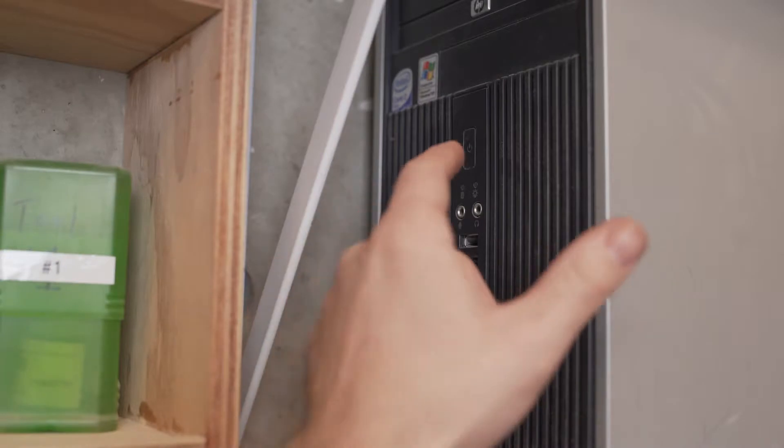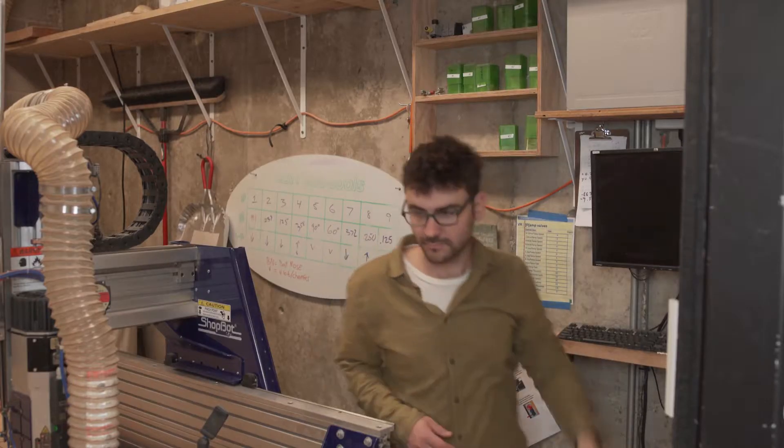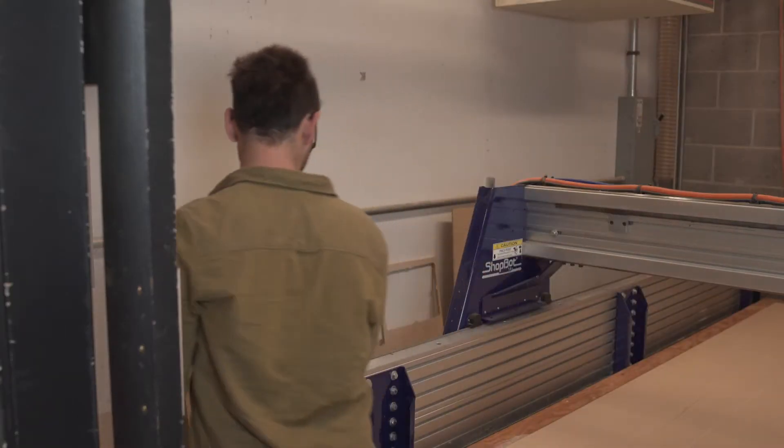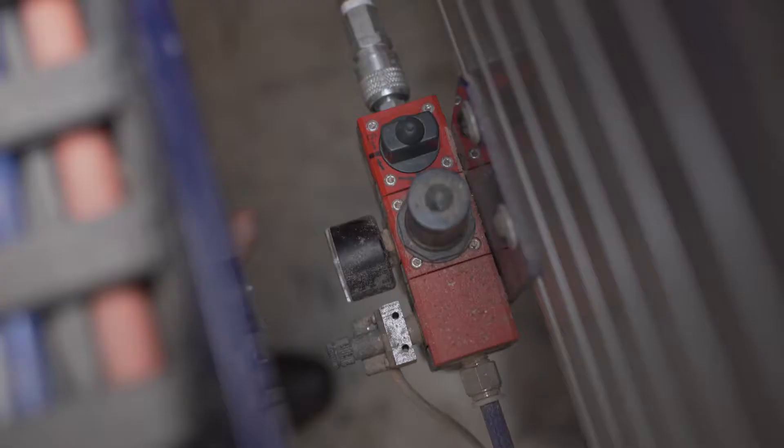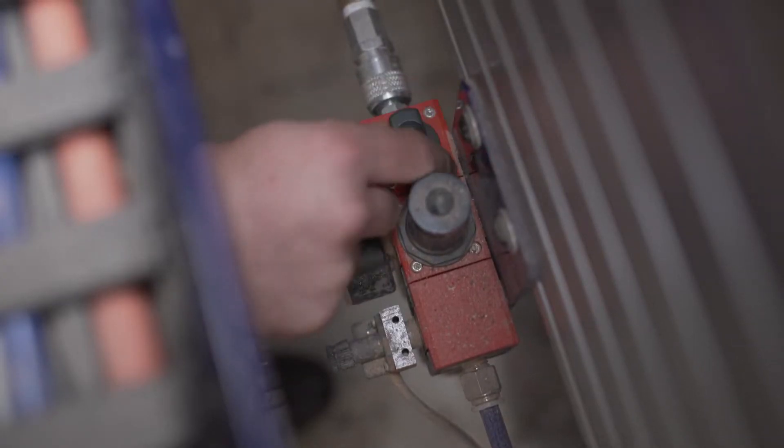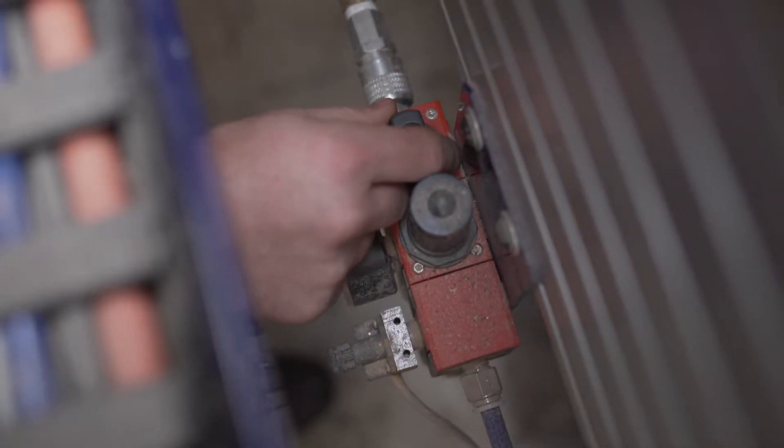Let's begin by turning on the computer. While the computer boots up, turn on the ShopBot. Open the valve on the main air assembly. You will hear a gentle hiss.